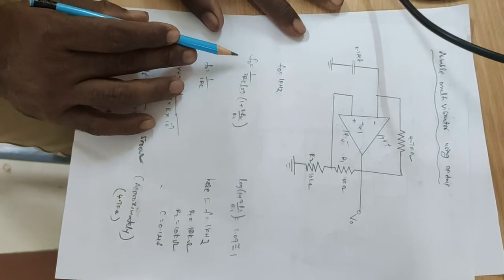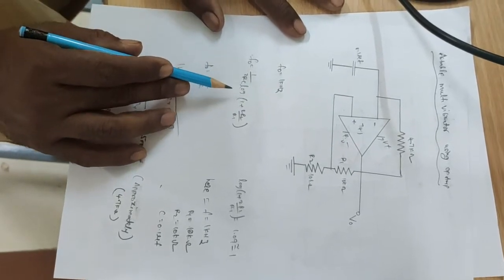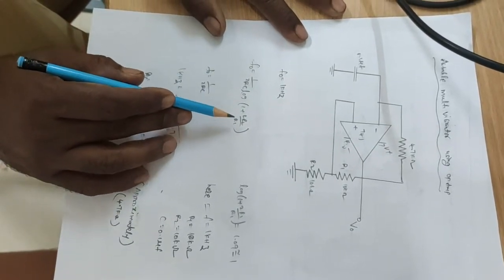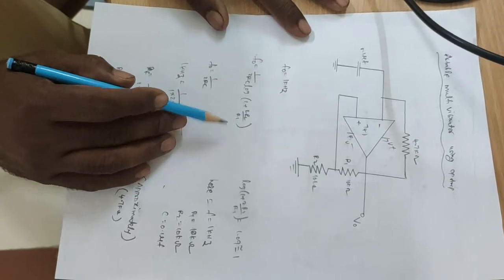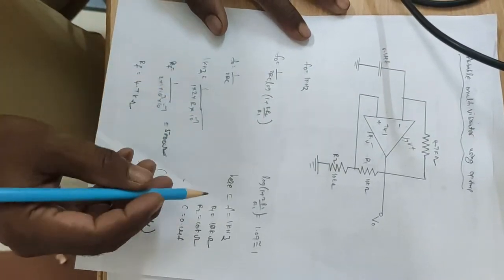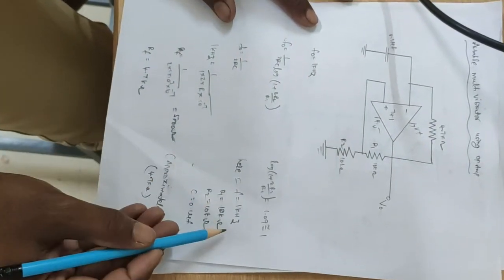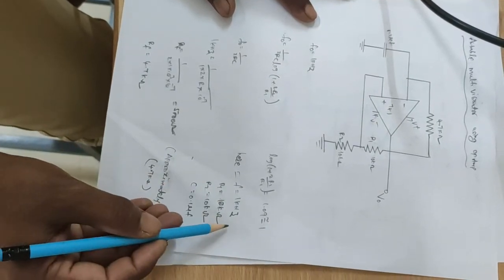This formula is f equal to 1 by 2 Rc into logarithm of 1 plus 2 R2 by R1. Here the assumption values are f equal to 1 kHz, frequency equal to 1 kHz.